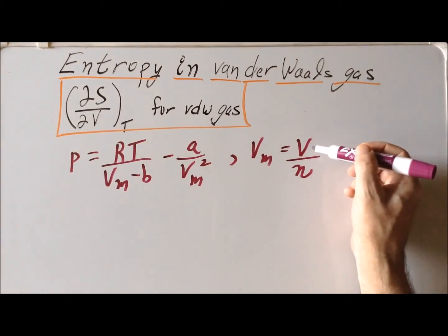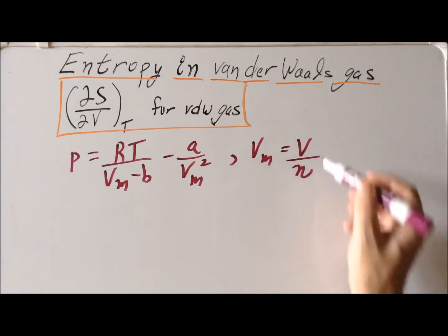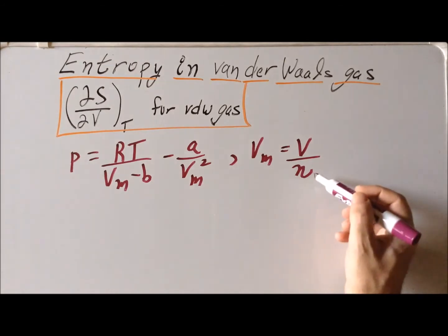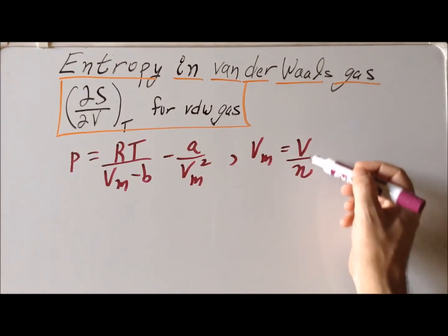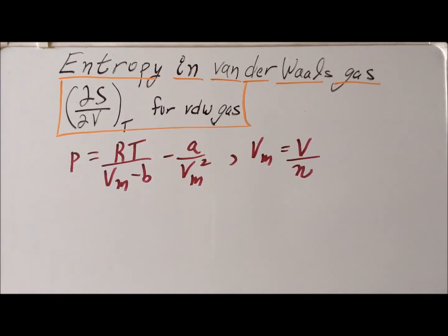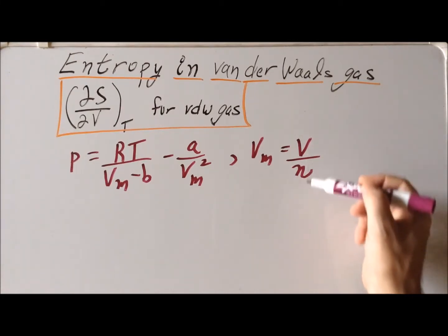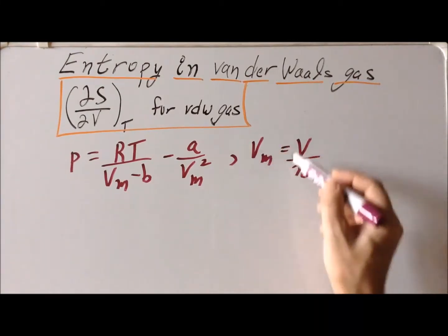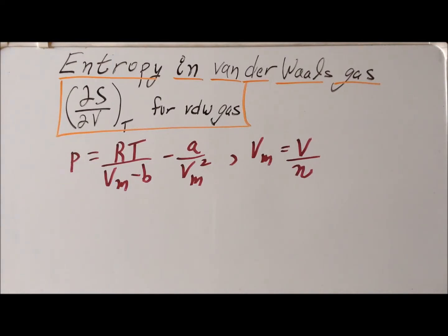We notice that the volume of the system is an extensive property — it depends on how big the system is — and the number of moles of gas also depends on the size of the system. So both V and n are extensive variables. But if we take their ratio, we get an intensive variable: the molar volume. We use a similar technique when we calculate the density of a substance.